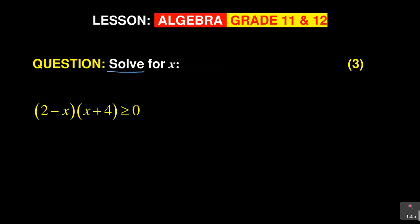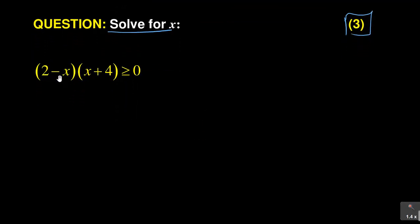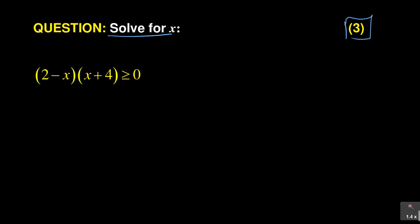You are solving for x — this is a 3-mark question. The question says: (2 minus x)(x plus 4) is greater than or equal to 0. You are supposed to solve for x. Watch this and see how you approach it. Already, you have been given a factorized expression, so it's easy to move from here.